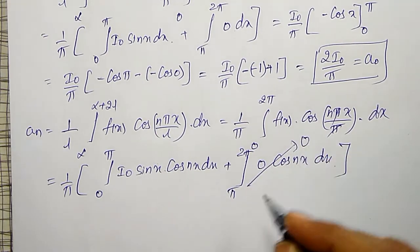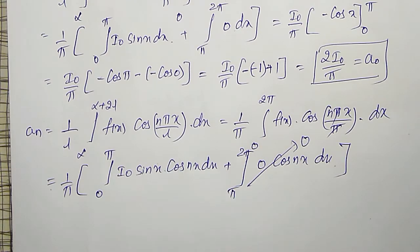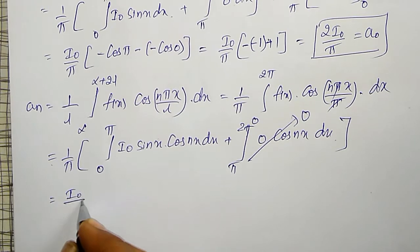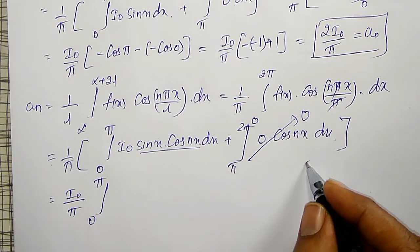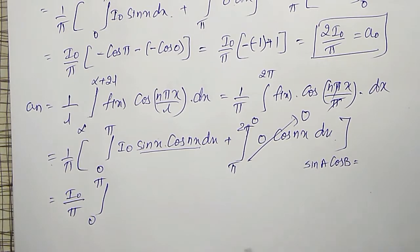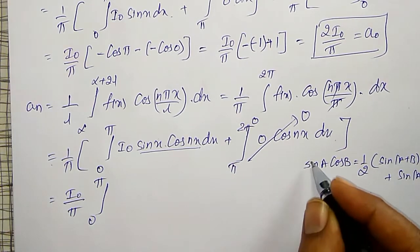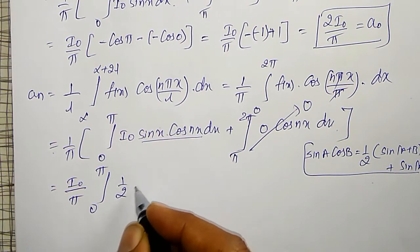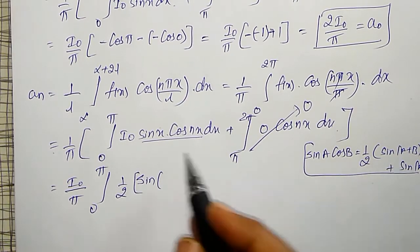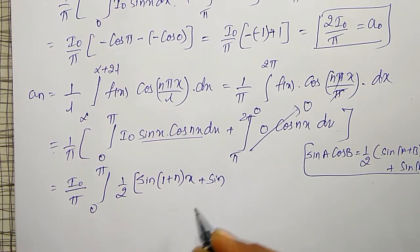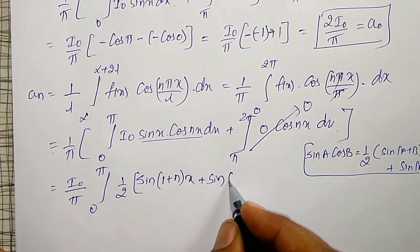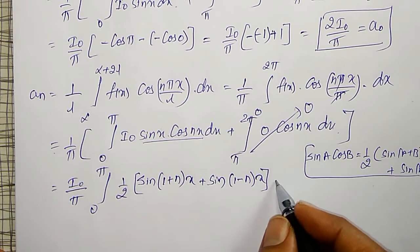Using the product formula sin A cos B = ½[sin(A+B) + sin(A−B)], with A = x and B = nx, the integral becomes (I₀/π)∫₀^π ½[sin(1+n)x + sin(1−n)x] dx. This is (I₀/2π)∫₀^π [sin(1+n)x + sin(1−n)x] dx.